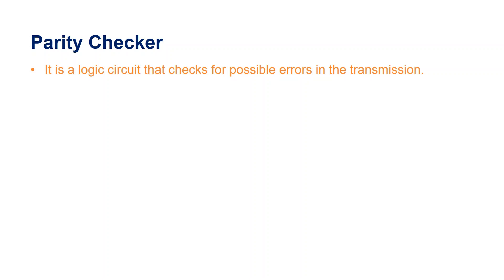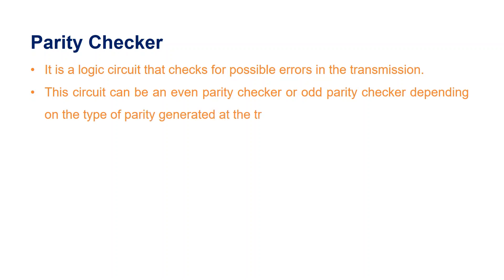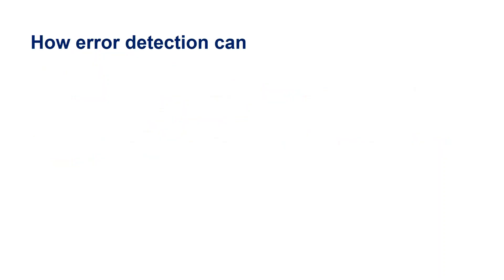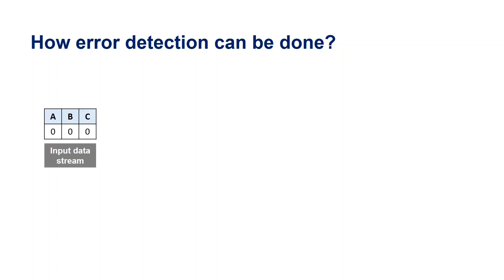A parity generator is a logic circuit that checks for possible errors in the transmission. This circuit can be an even parity checker or odd parity checker depending on the type of parity generated at the transmission end. When this circuit is used as an even parity checker, the number of input bits must always be even. Let us now see how errors can be detected with the help of a parity checker.